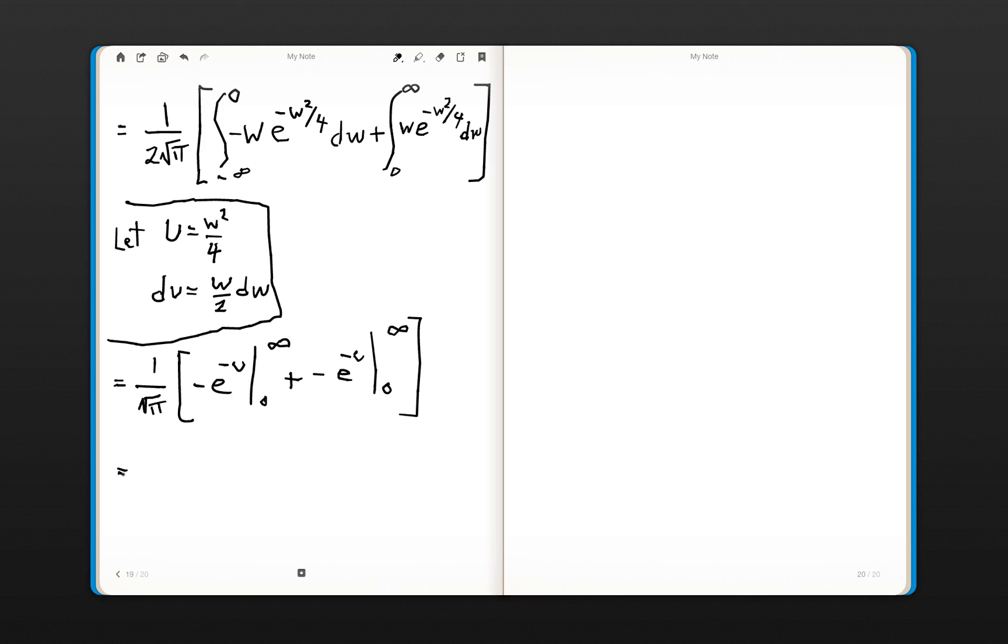And this turns out to be equal to 2 divided by the square root of pi, which is our final answer. That is the expected value of what we were originally looking for, the absolute value of X1 minus X2. Thank you.